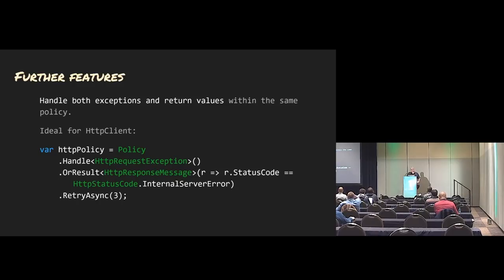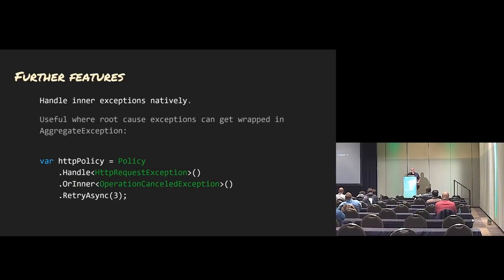You can handle both exceptions and return values from within the same policy. This is important because SOAP services will always return a 200 even if they failed — as far as SOAP is concerned, everything's cool — but you have to dig down into the XML to find out what actually happened. So now you can look at that return value as well. You can also handle inner exceptions: Policy.Handle(HttpRequestException).OrInner(OperationCanceledException) — so you can be more specific as to how to handle particular problems.